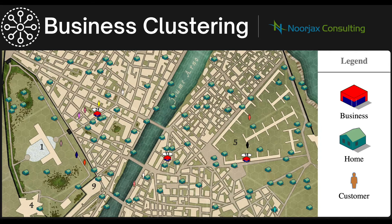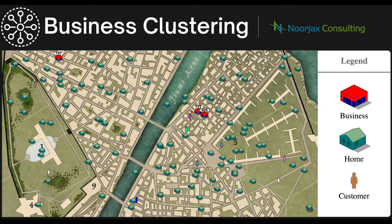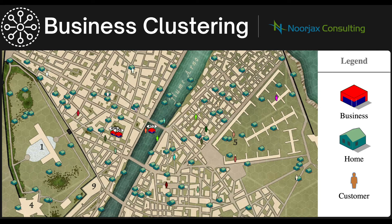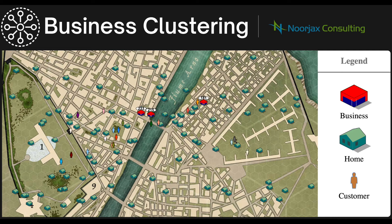Now let's try a scenario where two businesses use artificial intelligence and one is in a fixed position. You can already see that the ones with artificial intelligence will cluster together. The best thing businesses can do to increase their sales is to cluster — even when one of them is fixed. And if all businesses use artificial intelligence, they will all end up clustering together. That's how all of them increase their individual sales. It doesn't matter where they start — they will cluster no matter what, using the best position based on how the houses are distributed and how many people are in them.